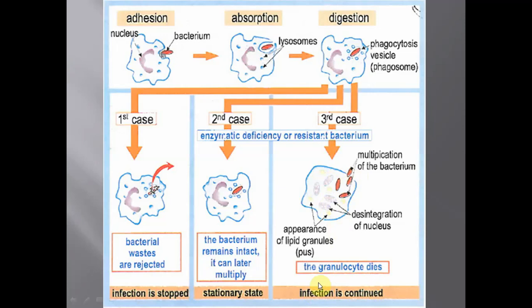When infection is continuous, we need the interference of the specific immune response to stop it. As a quick revision: the innate immune response is regardless of the identity of the intruder. It involves natural barriers as the first line of defense, which prevent infection by certain pathogens. If infection takes place, phagocytes — either granulocytes or monocytes that turn into macrophages, which are giant cells capable of phagocytosis — can hopefully destroy the pathogen. If this does not happen, the infection continues and we need the specific immune response.